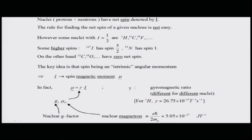The induced opposing field is proportional to the applied field: B_induced = -σ·B_z, where σ is the shielding constant (roughly 10⁻⁵ in order). Therefore the local Larmor frequency becomes ω = γ(1-σ)B. Nuclei which contain protons and neutrons have a net spin I; finding the net spin is based on experimental values. Nuclei with spin-½ include proton, carbon-13, and fluorine-19; higher spin numbers include iodine-127 (spin 5/2) and nitrogen-14 (spin 1); carbon-12 and oxygen-16 have zero net spin.